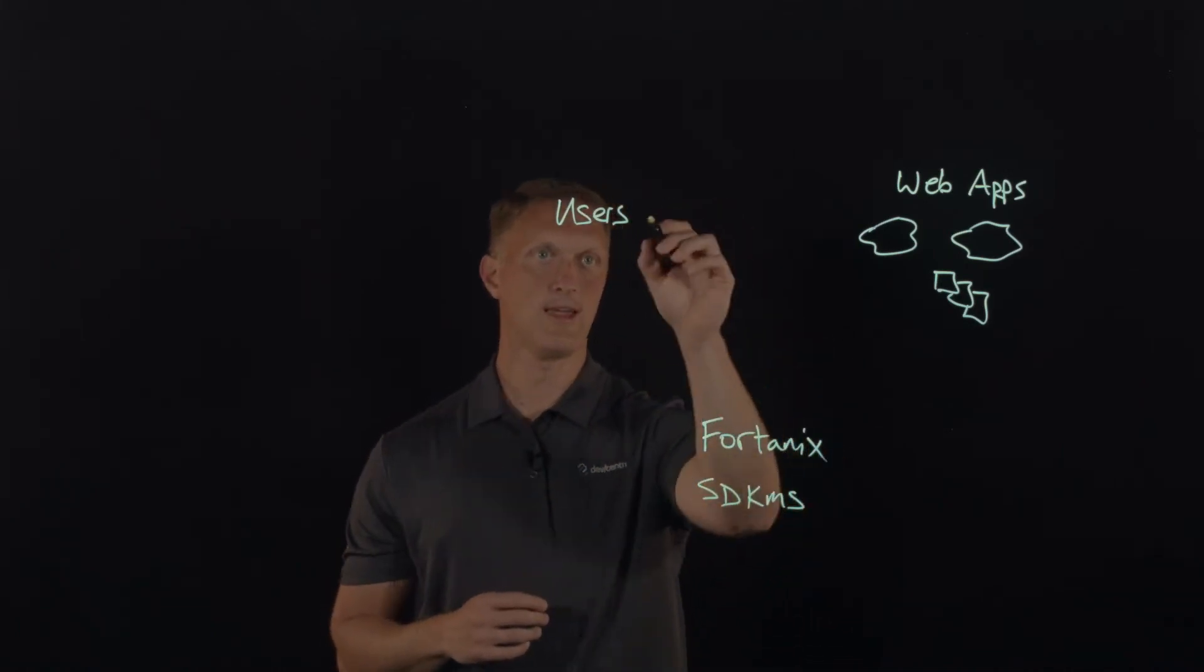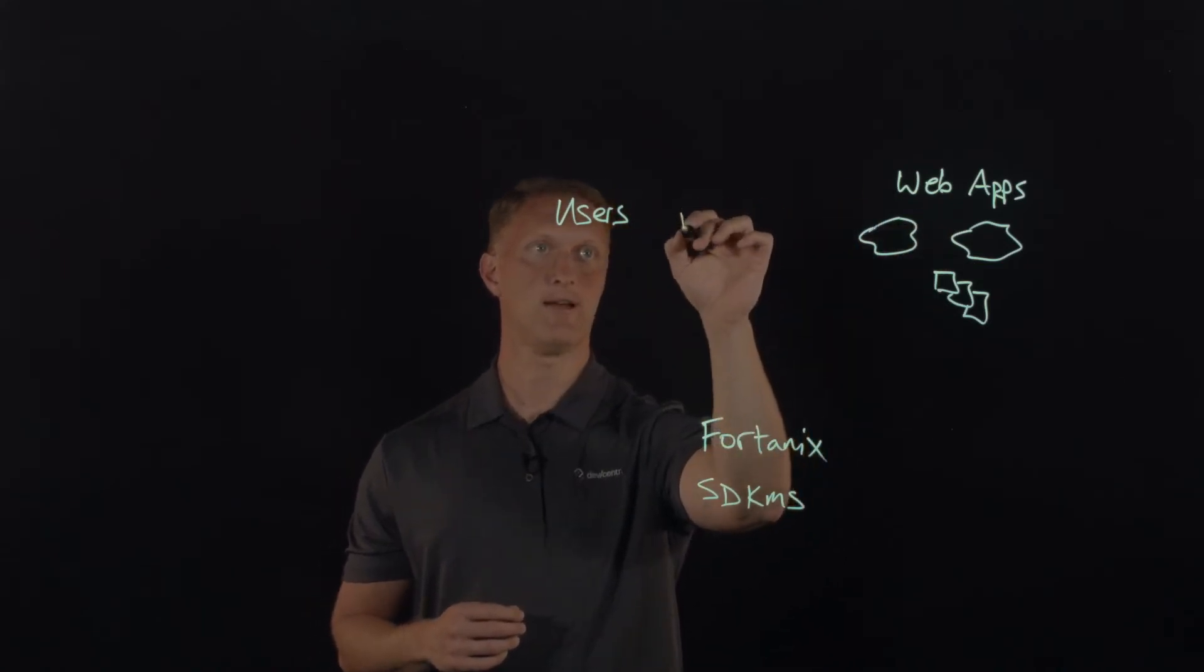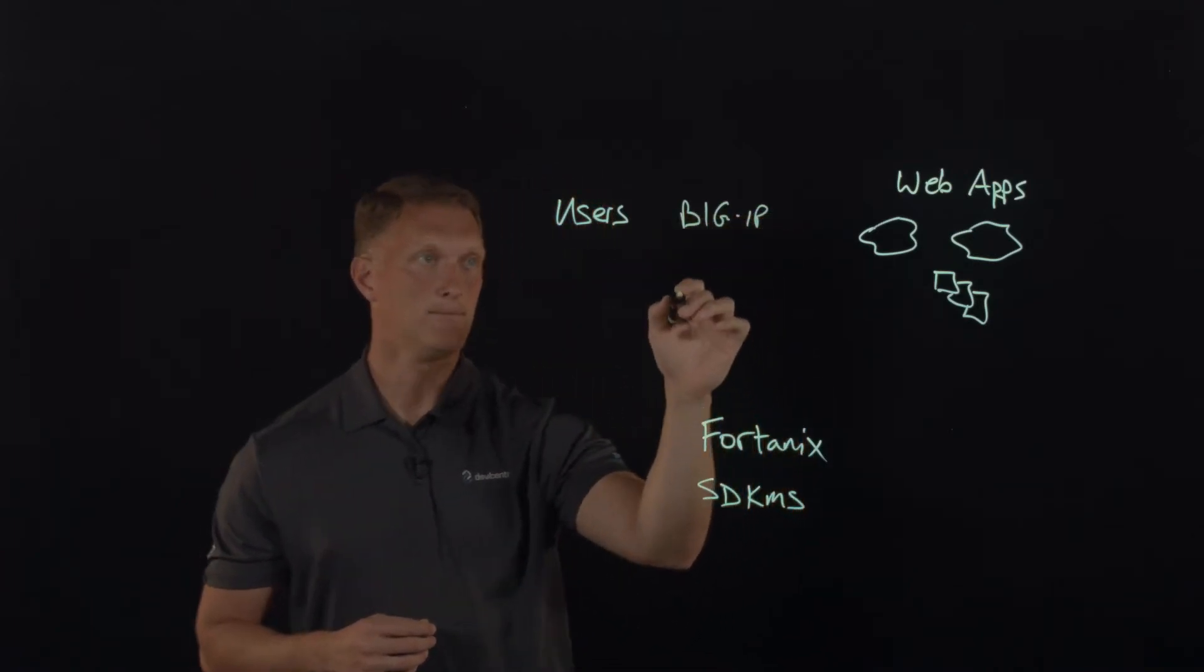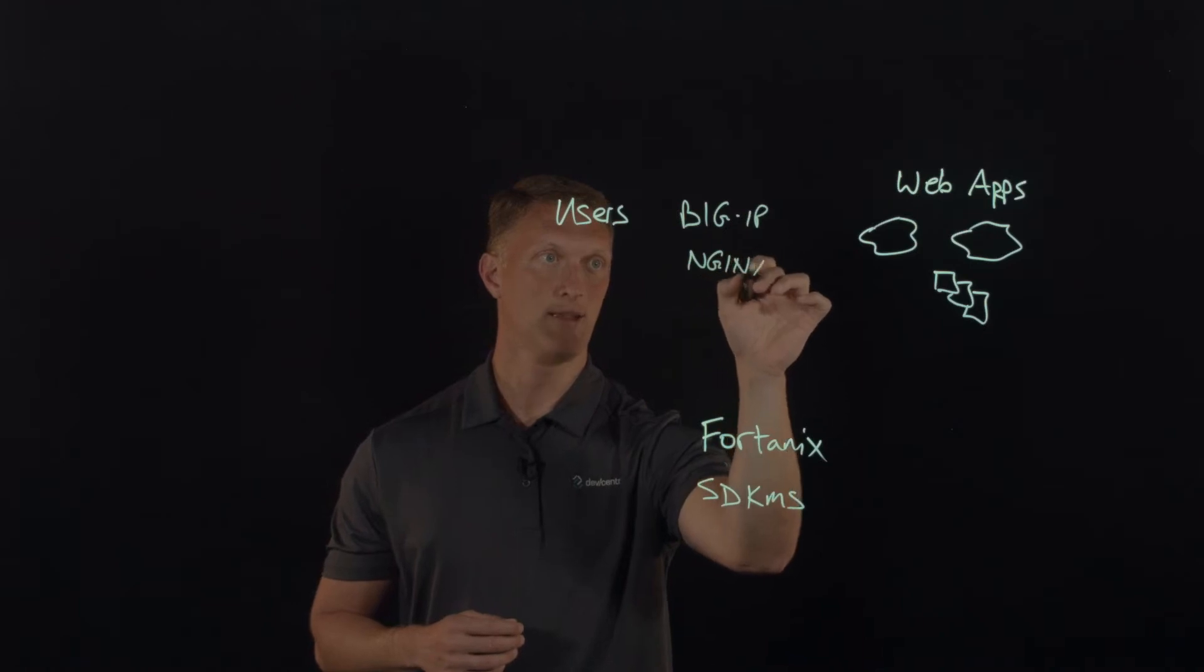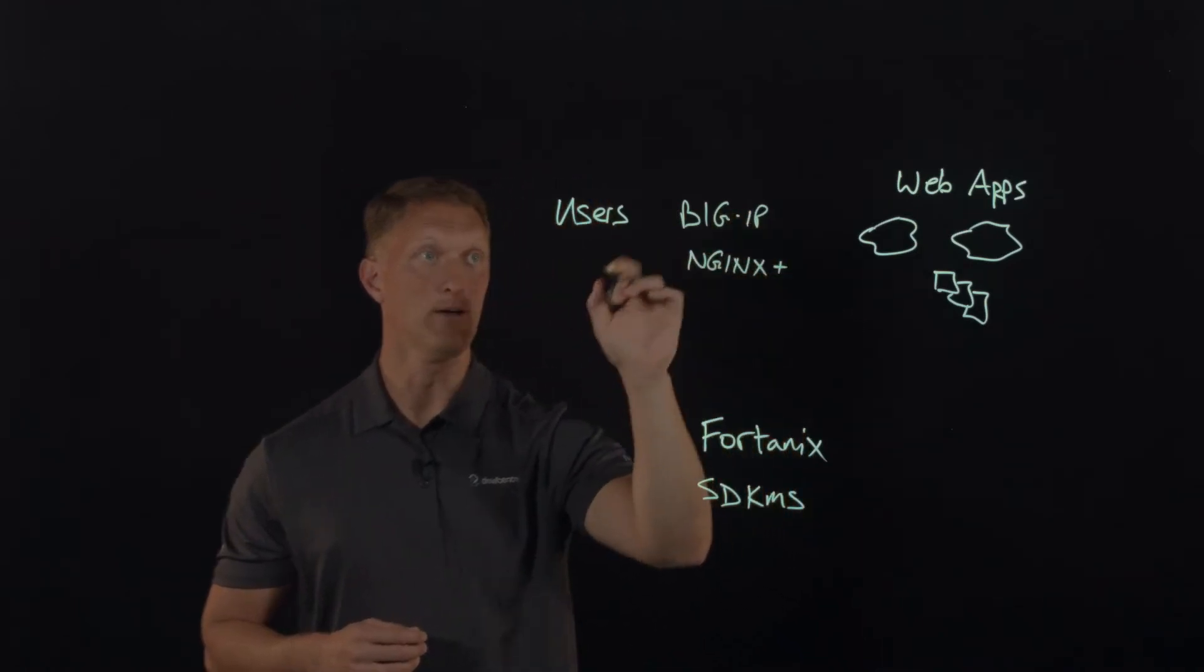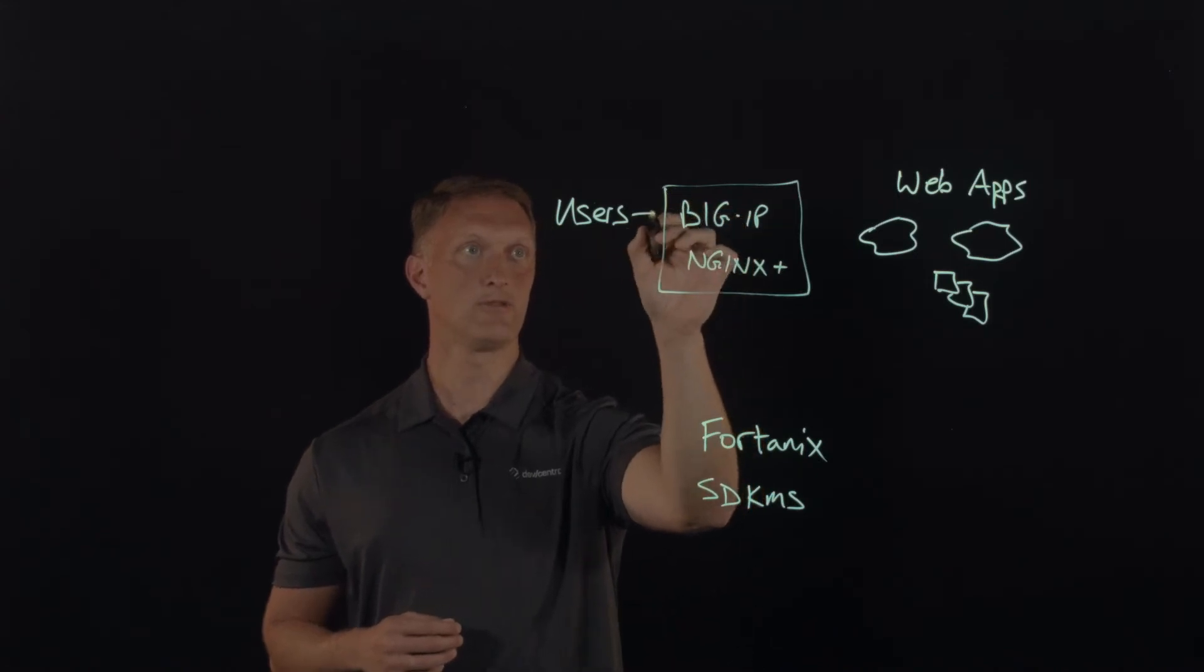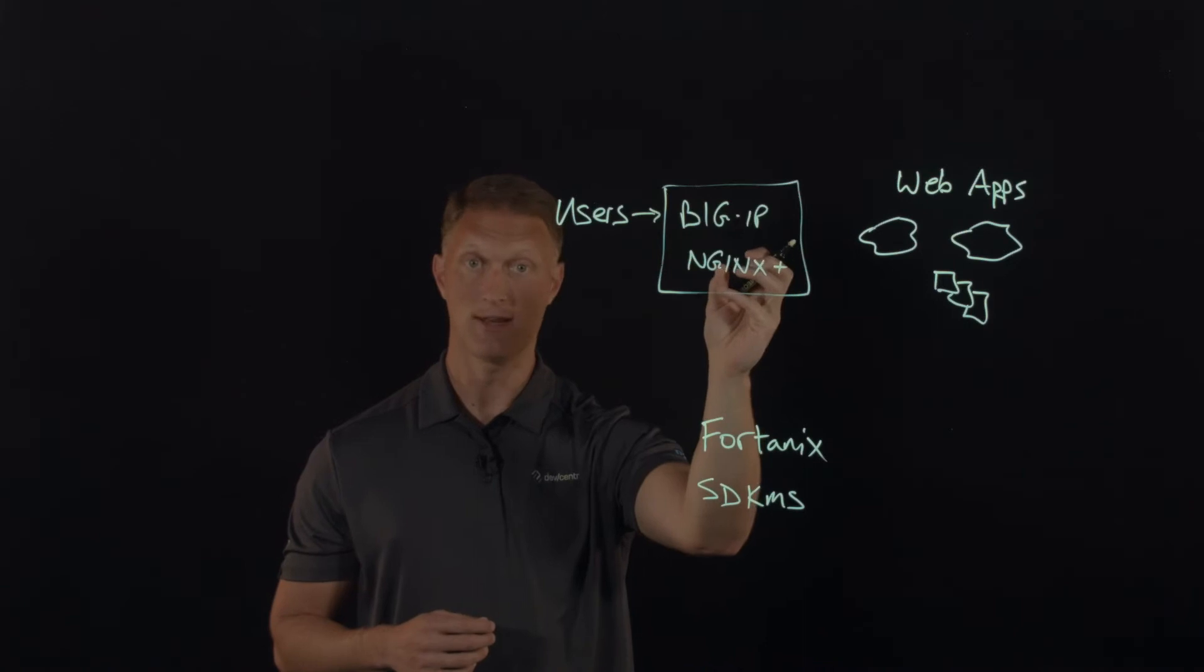So in this specific case, a user would come to access your web application. You would still have Big IP here from the F5 perspective doing what it does. And in fact, I'm going to go ahead and put NGINX plus right here as well. So I'll just put a little box around this. So users are going to come in and interact with Big IP or NGINX plus.